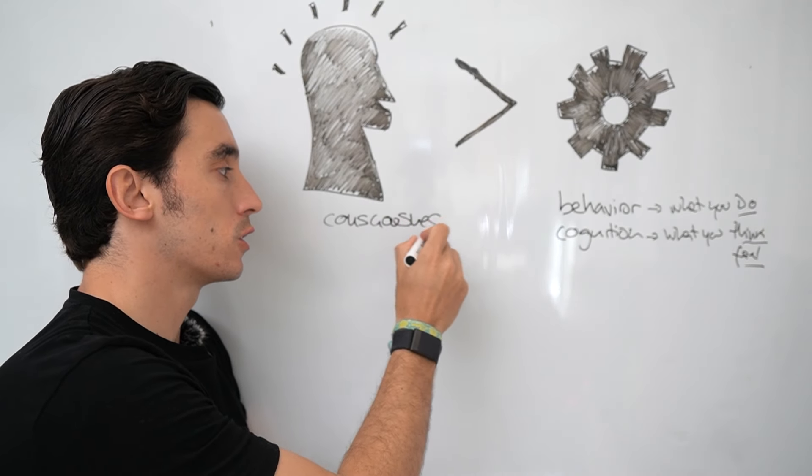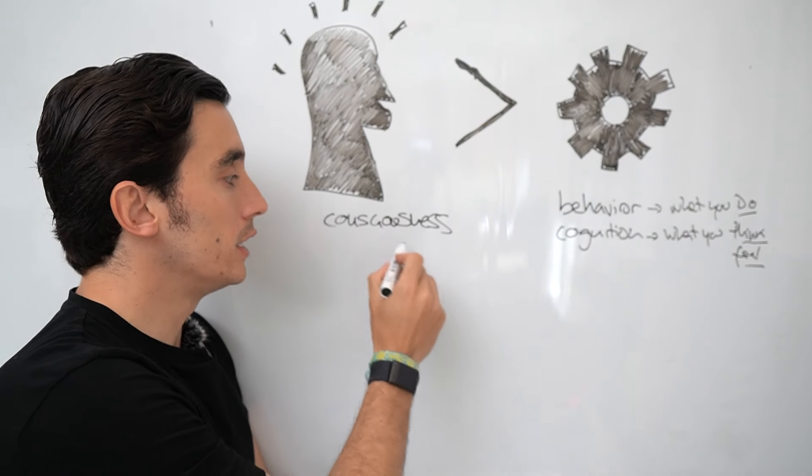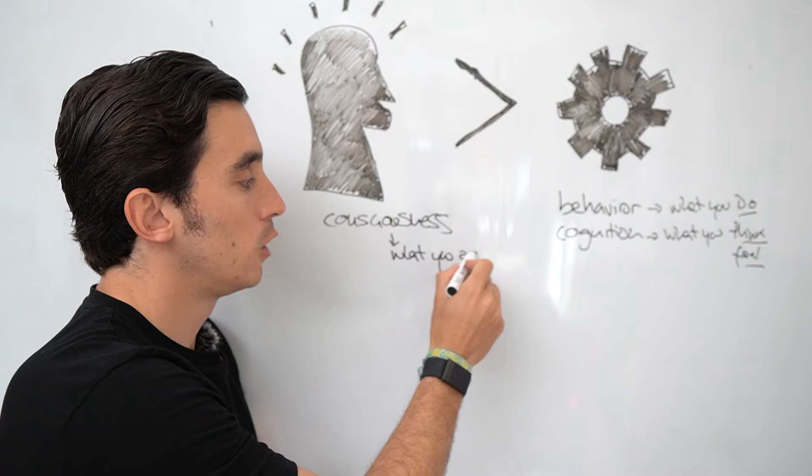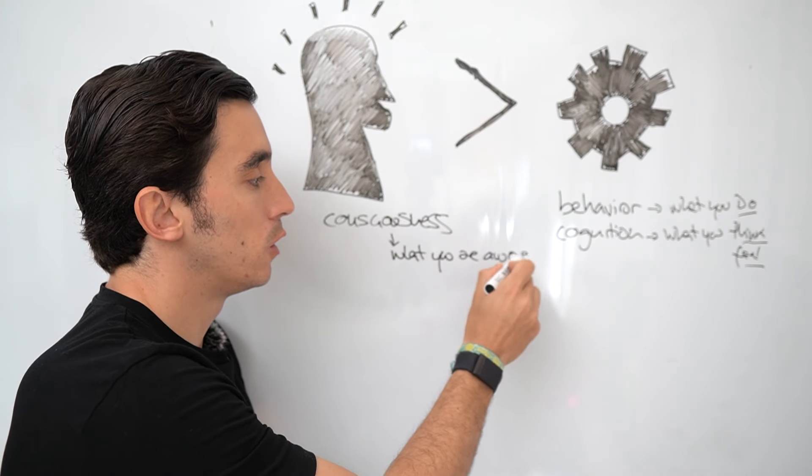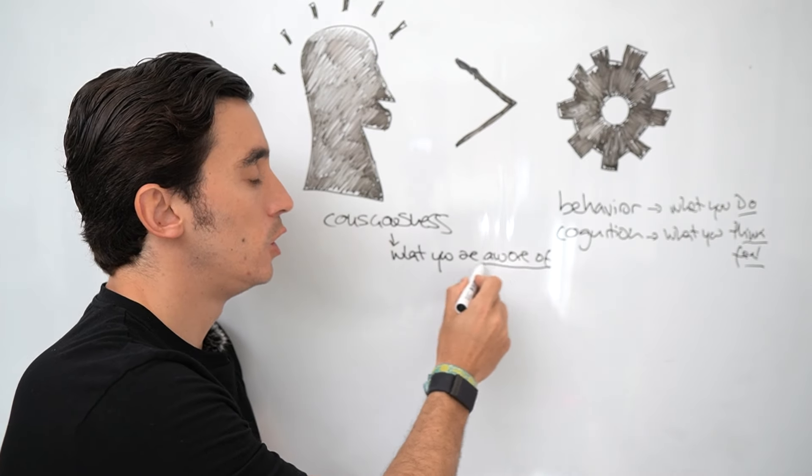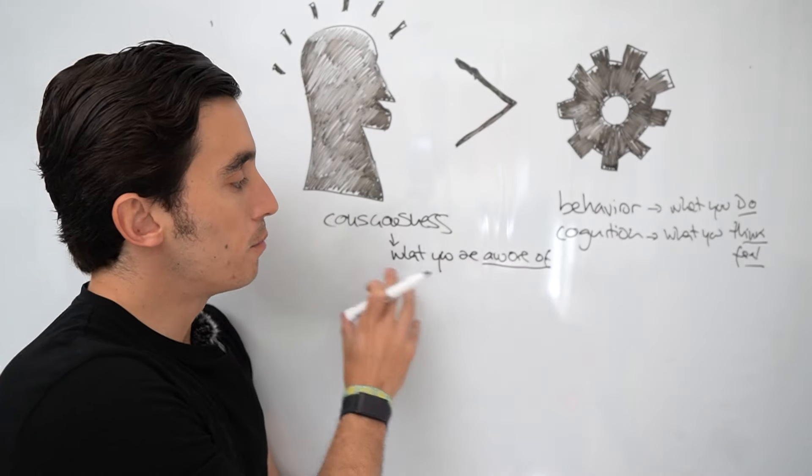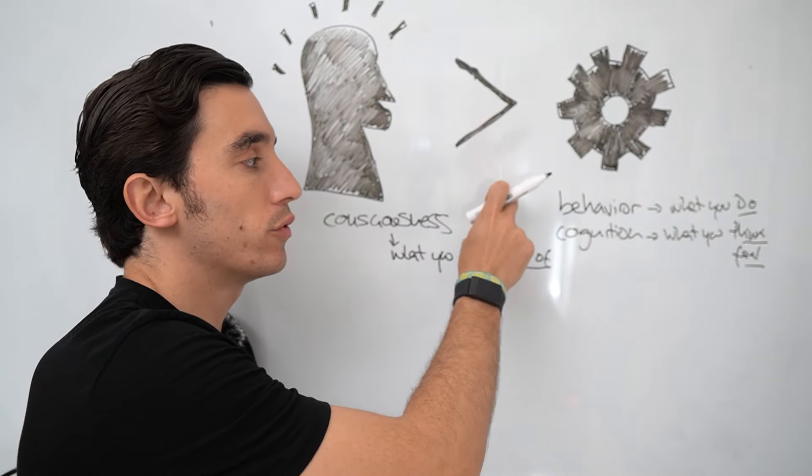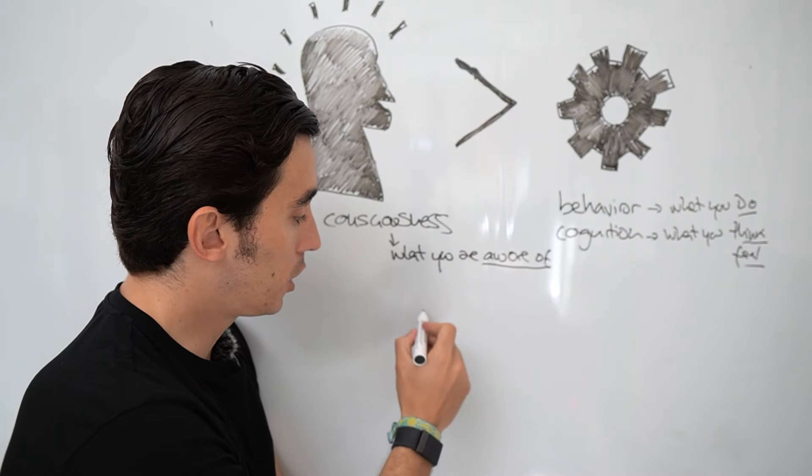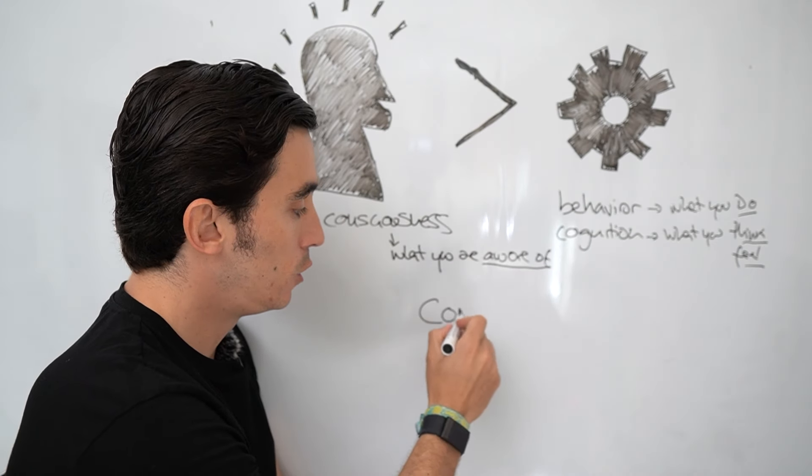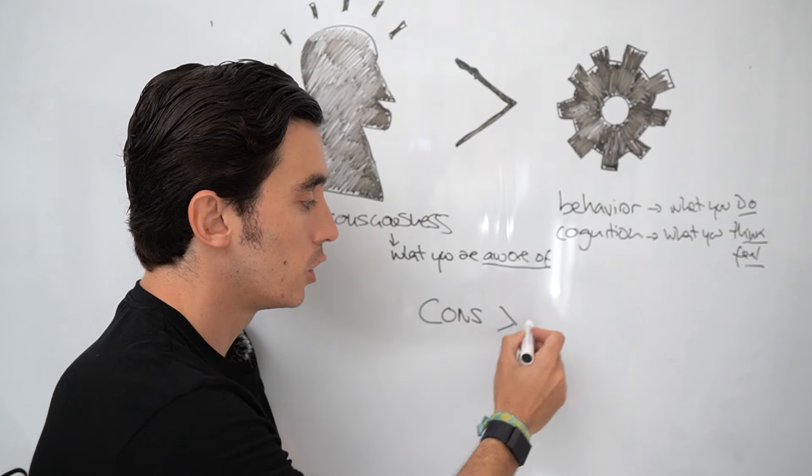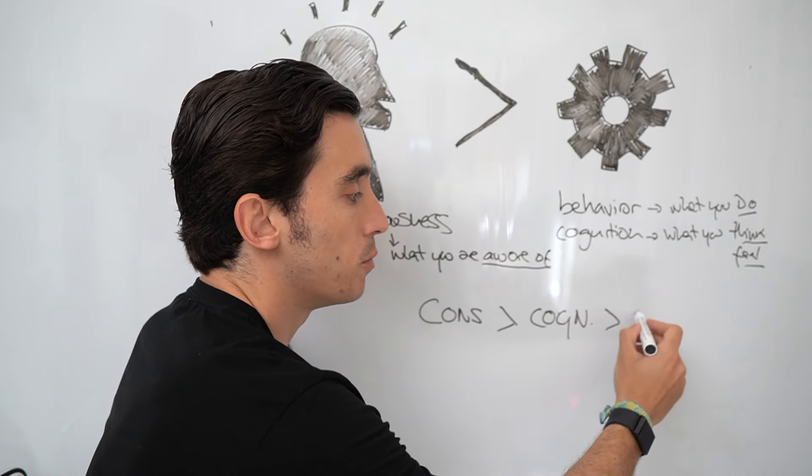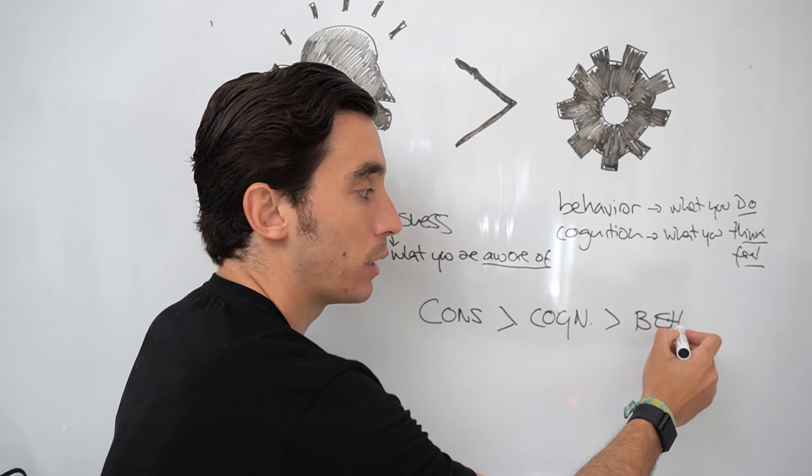But this is not addressing the fundamental source of your personal development and overall performance optimization, which is your consciousness. Your consciousness is basically what you are aware of, what you fundamentally perceive. By making changes at the level of your consciousness, you are able to influence your behavior and your cognition because consciousness pervades cognition, which pervades behavior.